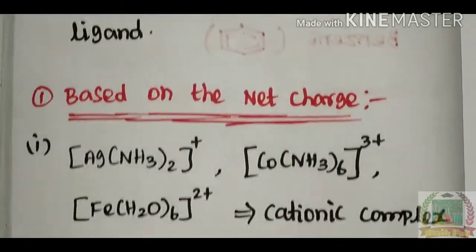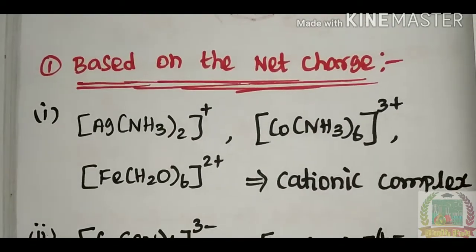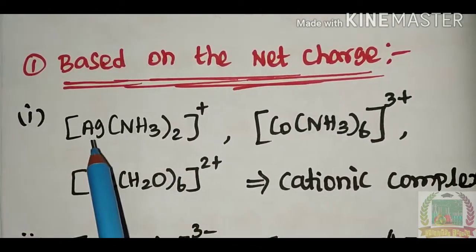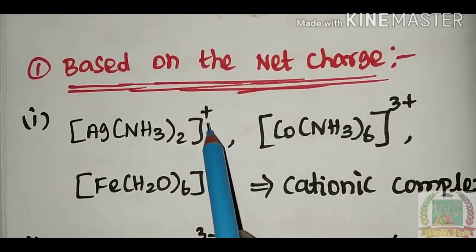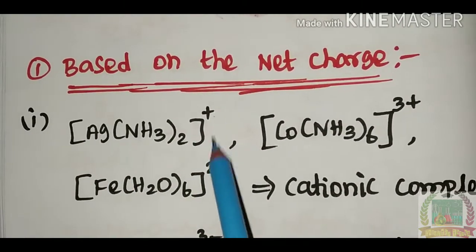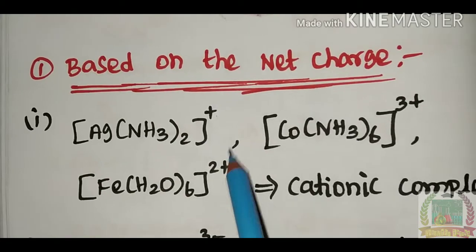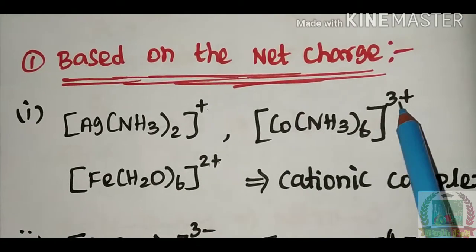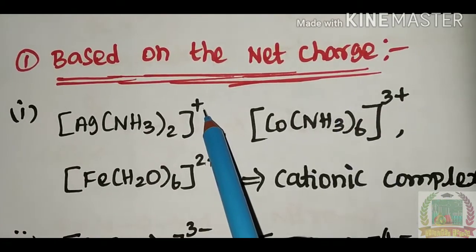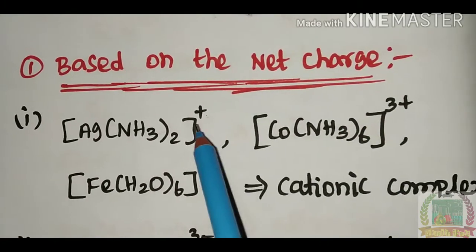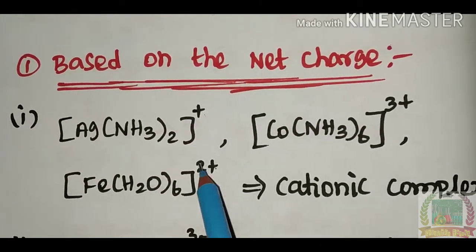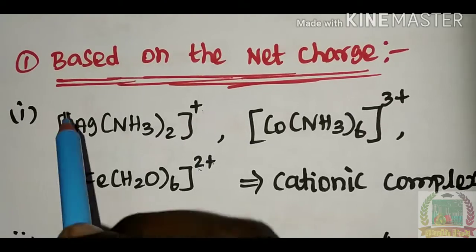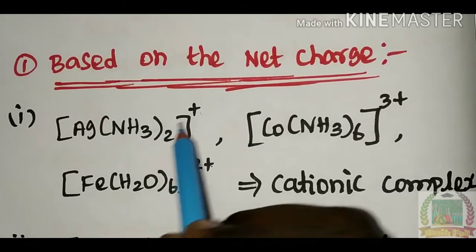First, let's talk about net charge. If the complex has a positive charge — whether mono-positive, di-positive, or tri-positive — we refer to it as a cationic complex.